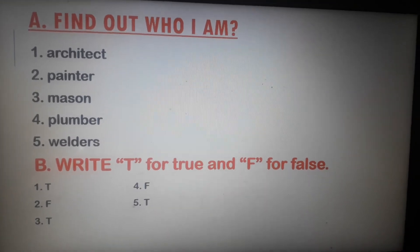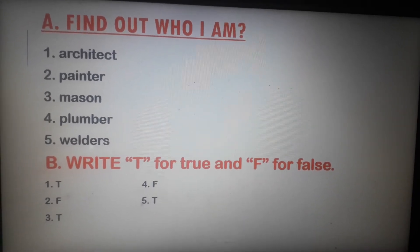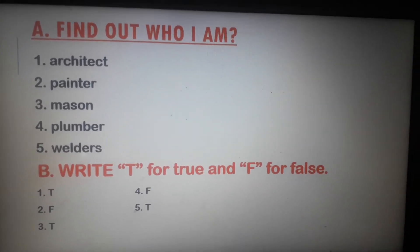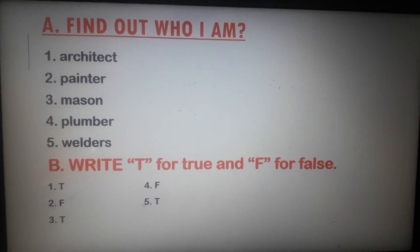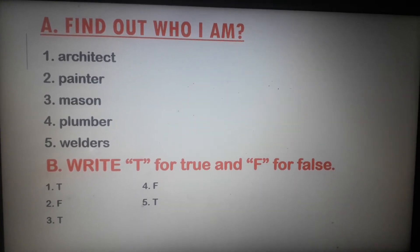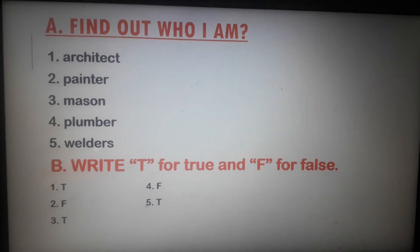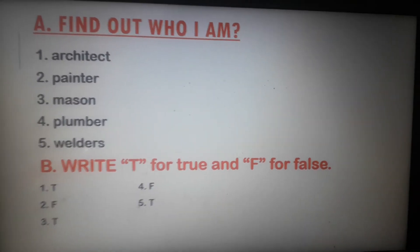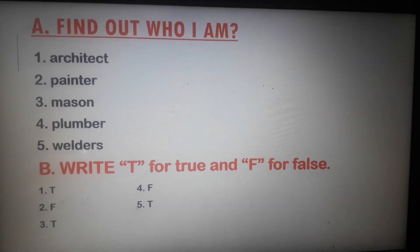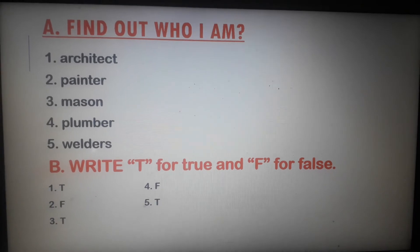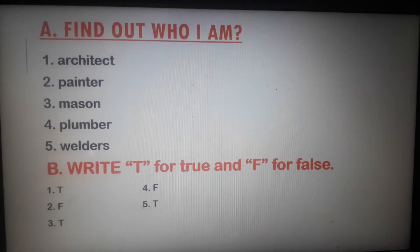Number 3 — I lay the pillars, walls and roof of the buildings. Answer: Mason. Number 4 — I fix pipes and taps. Answer: Plumber. Number 5 — I need goggles to do my work. Answer: Welder. Now Exercise B.